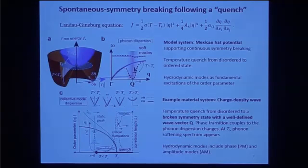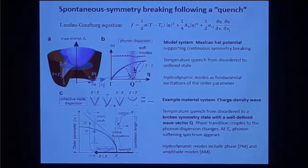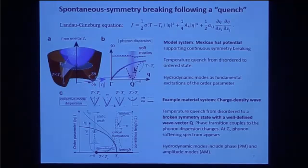Let me start by describing the system with the Landau-Ginzburg equation. This is the familiar Mexican hat potential. Typically this equation is described in terms of a temperature quench, where the ground state is the low-temperature state. If you change temperature to below T_C, you unfold the potential to a maximum, and at the energy minimum you have the phase mode and amplitude mode.